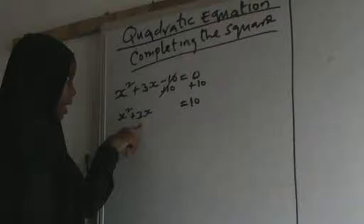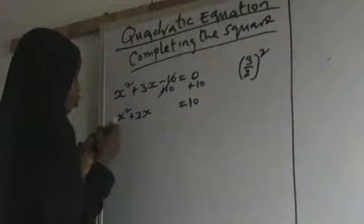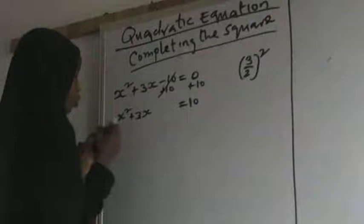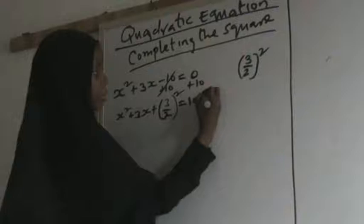So, we take the coefficient of x which is 3. So, we divide it by 2: 3 over 2. And we square it: 3 over 2 squared. So, we add it to both sides. Plus 3 over 2 squared on both sides.